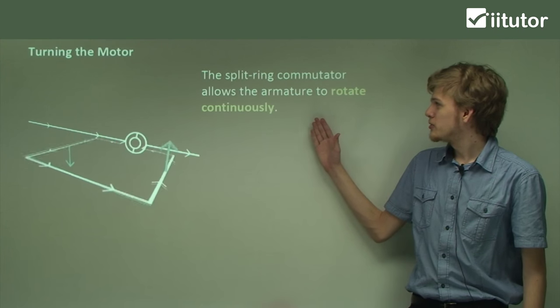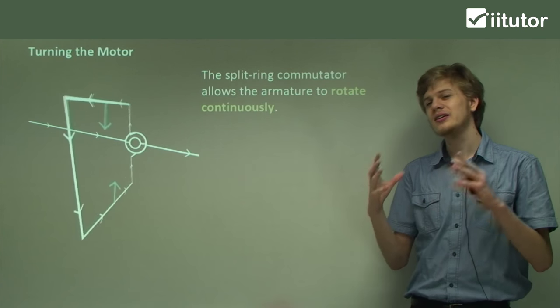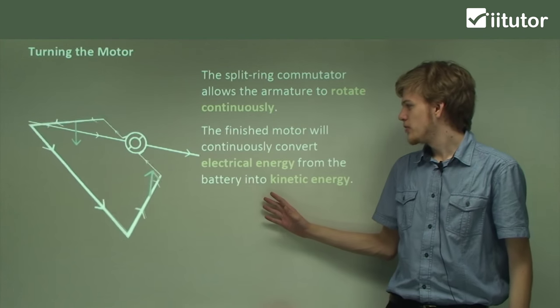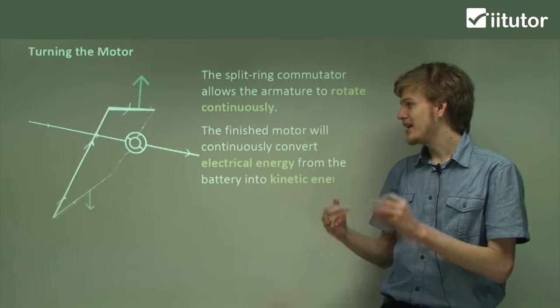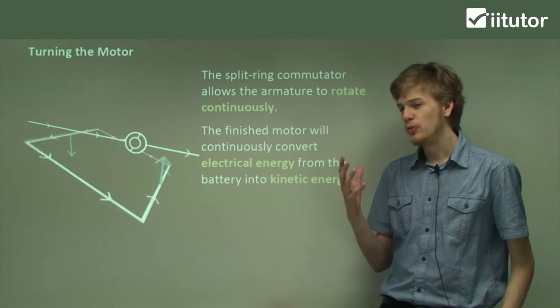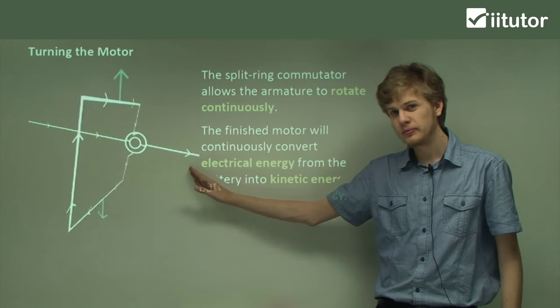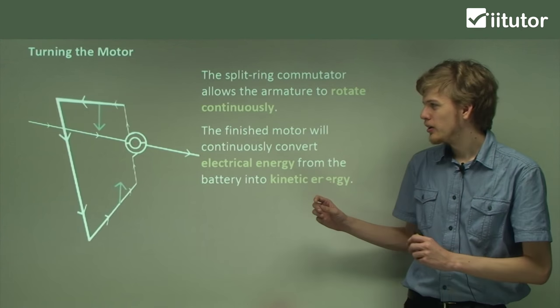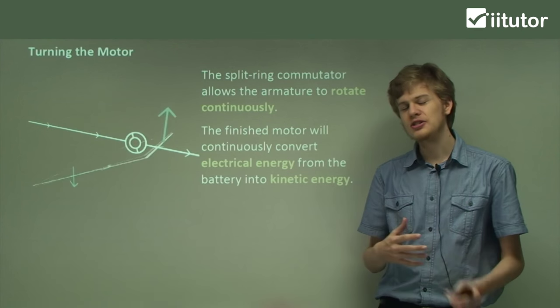So the split ring commutator allows the armature to rotate continuously. The finished motor will continuously take electrical energy that you put into it in the form of electrical current, and turn it into kinetic energy, which is the rotational energy of the armature.